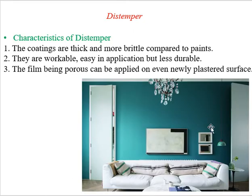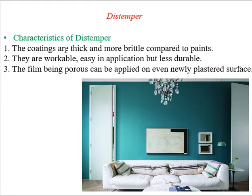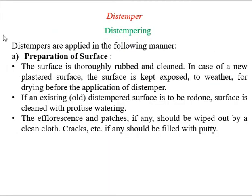Characteristics of distemper include that it must be workable and easily applicable, though it is less durable. The film is porous and can be applied evenly on new plaster surfaces. The coating should be thick and is more brittle compared to paints, but it makes walls look better.